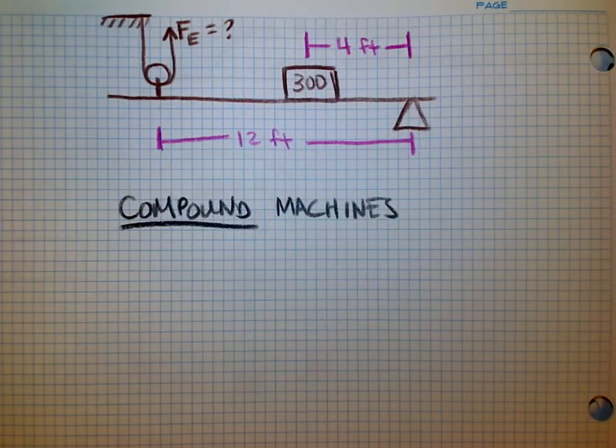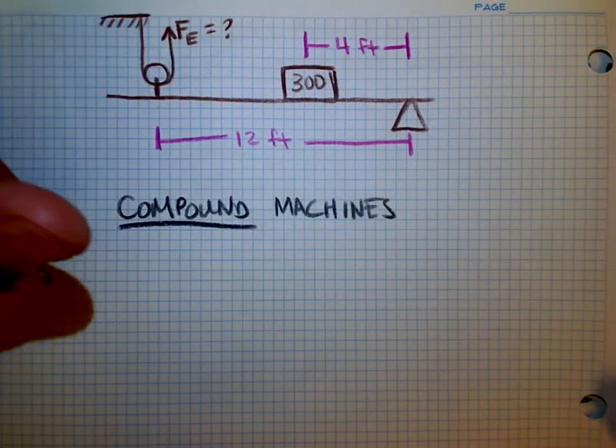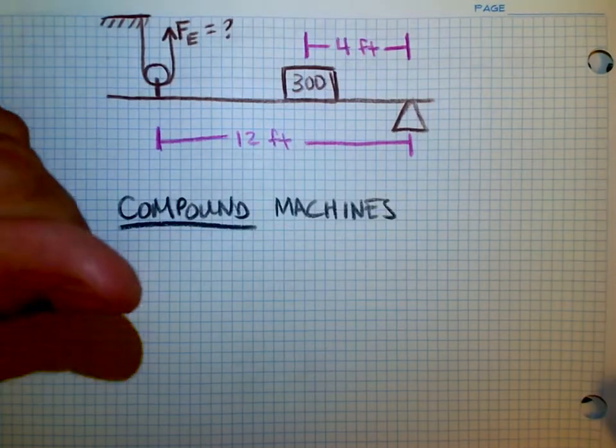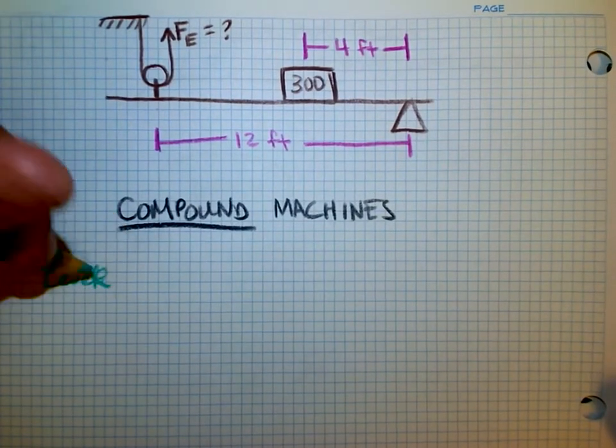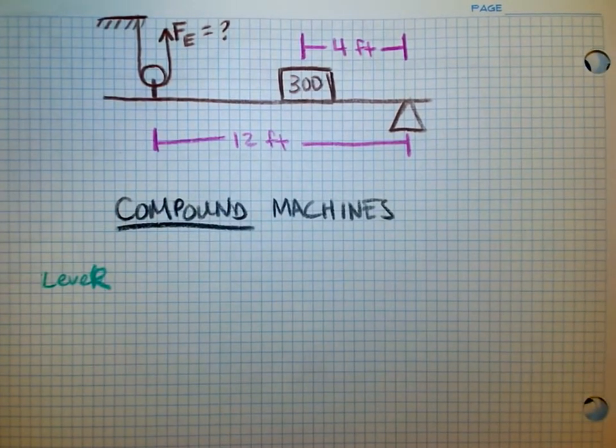What we want to do is we want to figure out the mechanical advantage of each piece individually. So let's talk about the lever first. With the second class lever, the mechanical advantage of that system means I'm going to compare the distances.